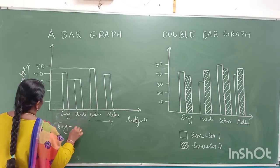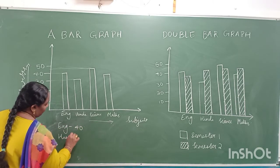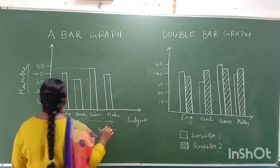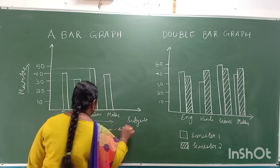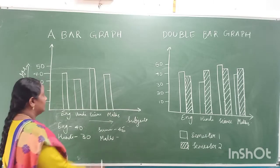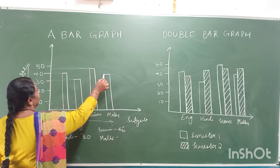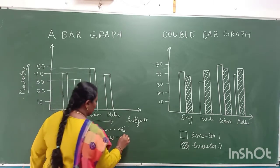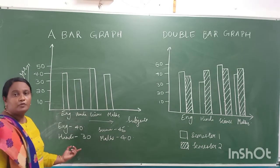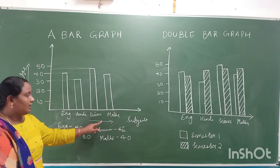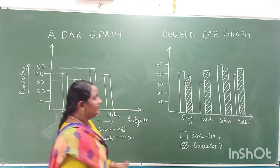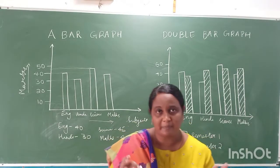For English we got 40 marks, for Hindi we got 30 marks, for Science the bar is between 40 and 45 — we can write it as 45 marks. For Maths we draw a line across and read 35 marks. So for Semester 1, one student scored: English 40, Hindi 30, Science 45, and Maths 35. This is how we represent data through a single bar graph.